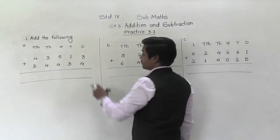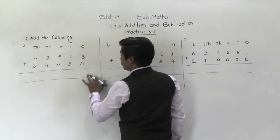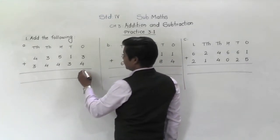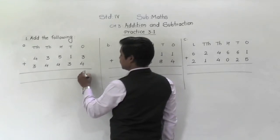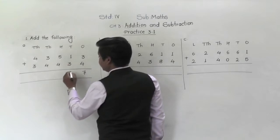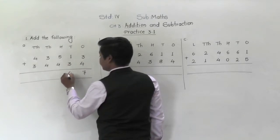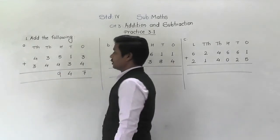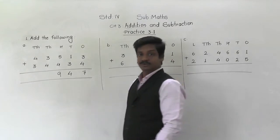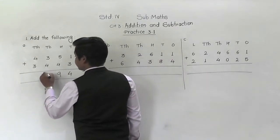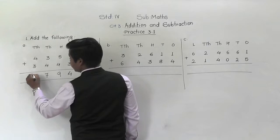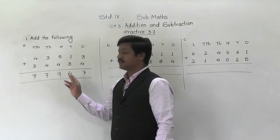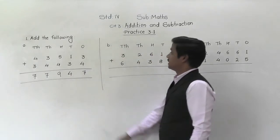While adding, as you know, we start from the ones place. Three plus four is seven; one plus three is four; five plus four is nine; three plus four is seven; four plus three is seven. So the answer is 77,947. Next example.